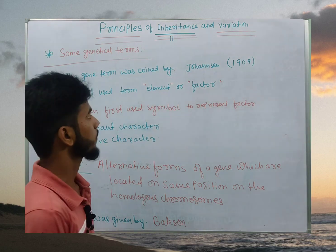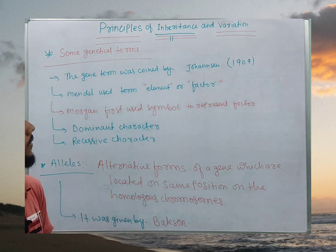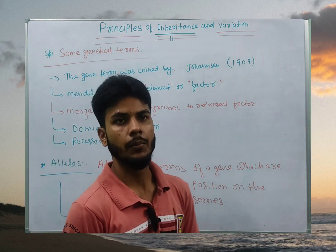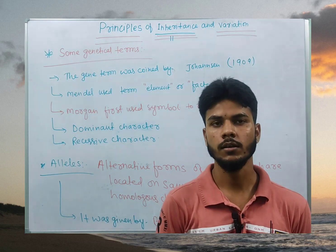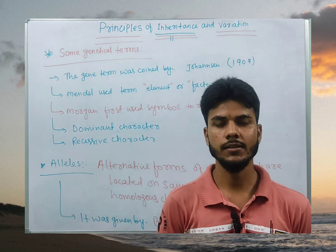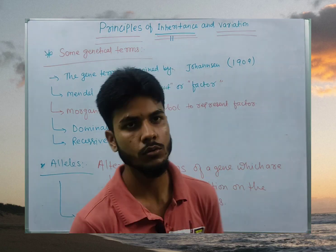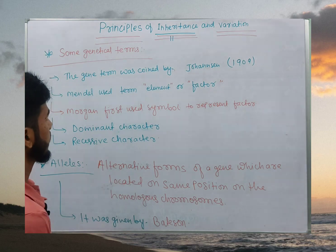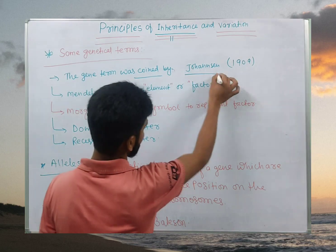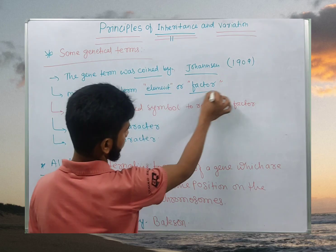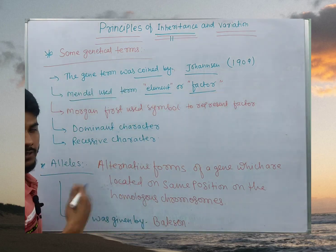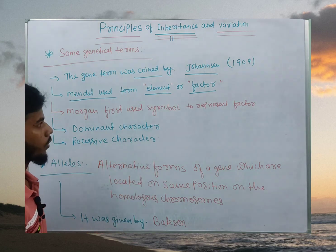So we have next term. First of all, we are completing the term factor or element. Do mendel a apne discovery ke tawaraan just gene chijjoh ko factors bolata elements unho nebo kaha thaa. He said Johansson in 1909, Gene. So basically, the term Gene was coined by Johansson in 1909. Mendel used the term element or factors for these things, which are basically transmitted from parents to offspring.